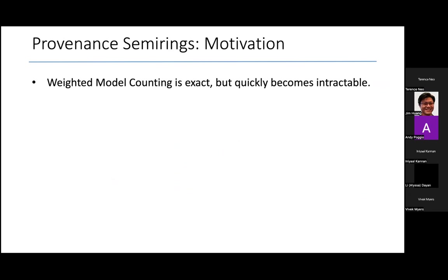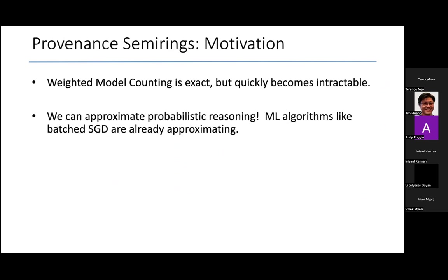As I said, WMC is exact, but quickly becomes intractable. But the key insight here is we don't need exact probabilities or gradients. Machine learning algorithms such as batched stochastic gradient descent are already approximate.